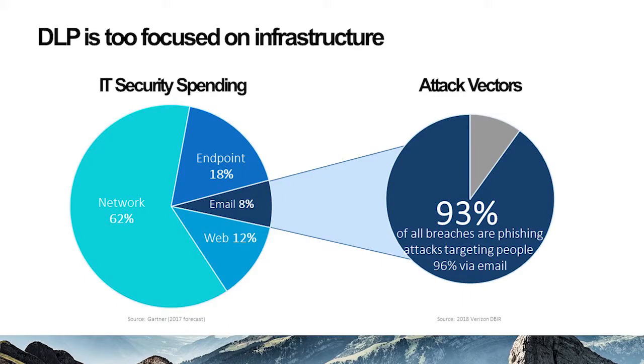DLP is also too focused on infrastructure. Looking at the IT security spending breakdown, a vast majority of IT spend is through network technologies — infrastructure. We see endpoint breakdown of web gateways and email. But if we look at where attacks are coming from and where potential data breaches could be occurring, the breakdown is pretty telling.